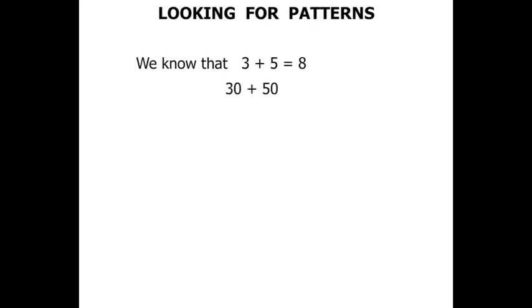What about 30 plus 50? Well, that equals 80. And there's a pattern there. We've got the 3 and the 5 that made the 8, and there's zeros on at the end there.